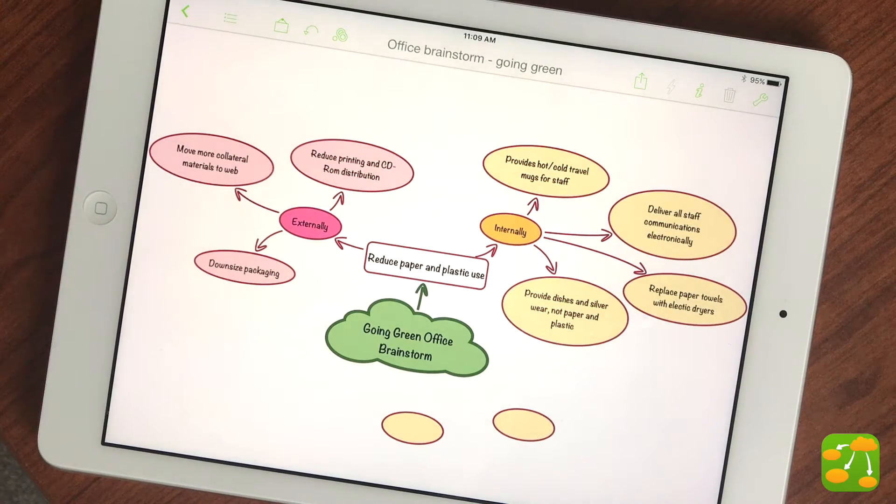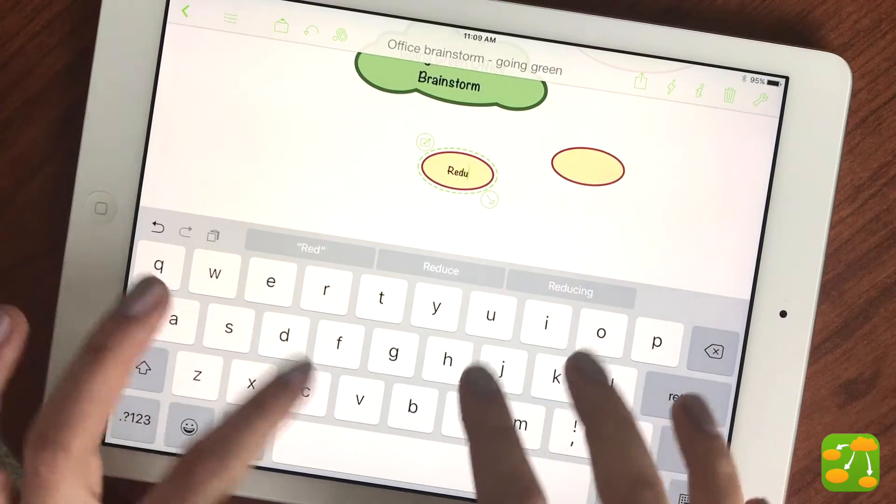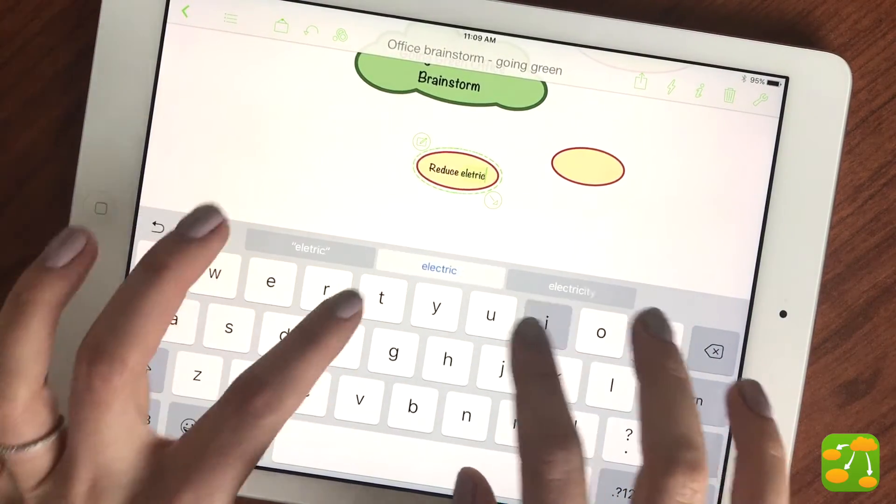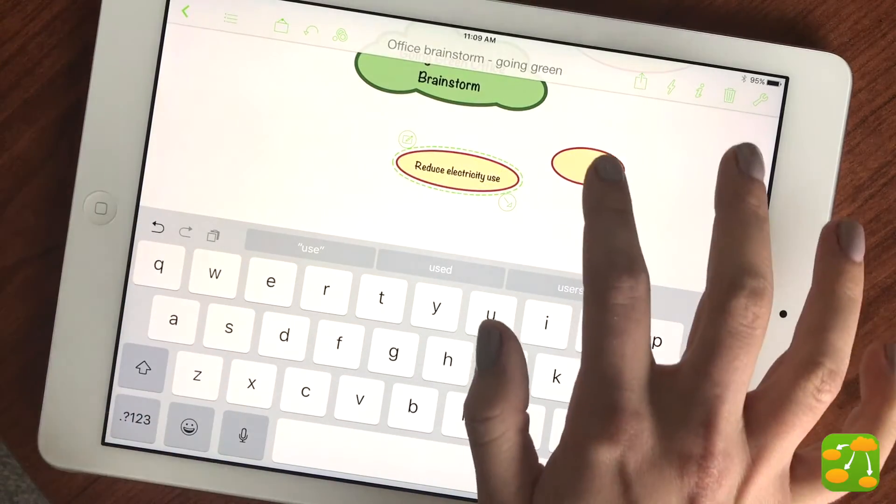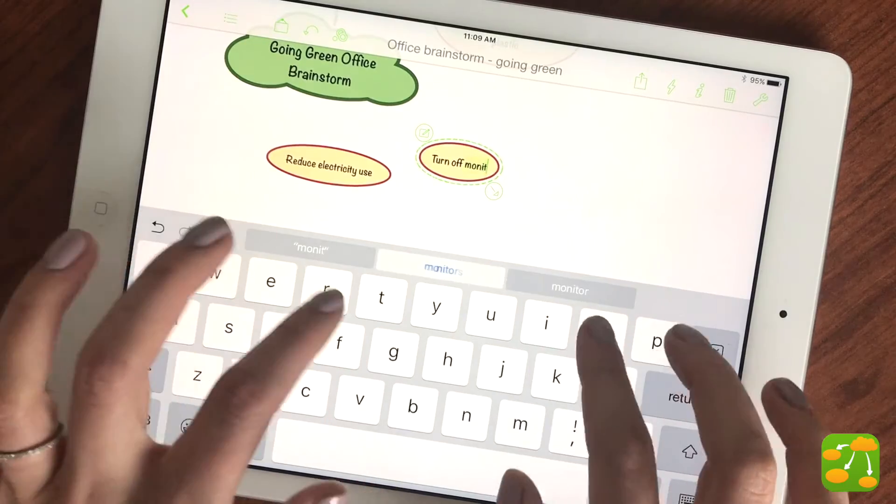To add text to a symbol, double tap it to go into text editing mode and then type. Your idea symbols will automatically adjust their size to accommodate the text that you add.